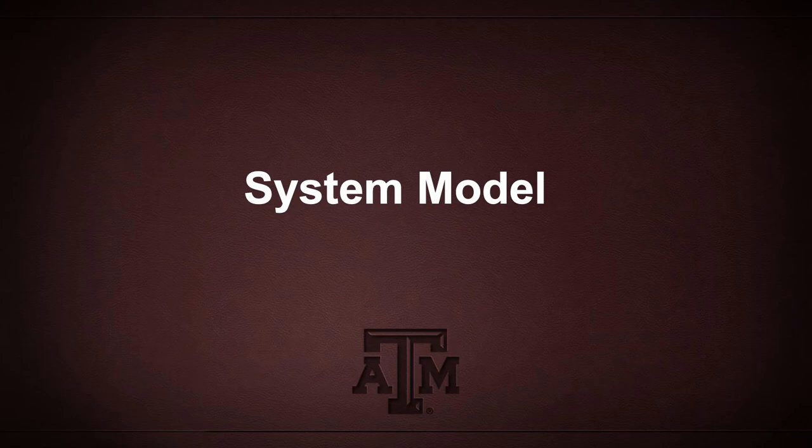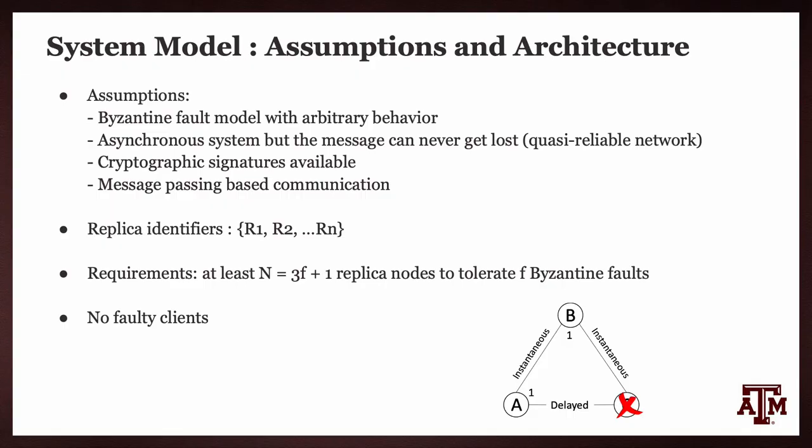Now the system model. A Byzantine fault model is being considered. It is an asynchronous system, but messages can never get lost. Cryptographic signatures are available and message passing is used for communication. Replica identifiers are R1, R2, and RN. The requirement is 3F plus 1 replica nodes to tolerate F Byzantine faults, and it is assumed that there are no faulty clients.